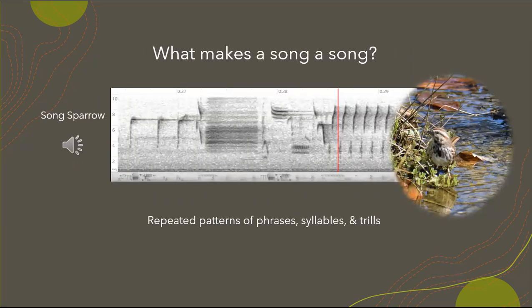What makes a song actually a song? The distinction between song and call can be seen as a distinction in complexity. Songs are typically long, loud displays of territorial behavior — repeated patterns of phrases, syllables, and trills. In some species there's a gray area, but I chose a song sparrow as the example. That's a very complex song — a mixture of phrases, syllables, and trills. You can see the trill right there in the spectrogram, which is why I wanted to show you these patterns.